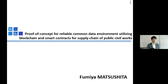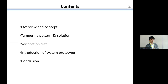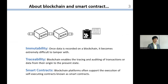So nice to meet you everyone. I'm Fumia Matsushita from the University of Tokyo, and it's very honored to have this opportunity to present. My research topic is about a pre-hub concept for a real common data environment to utilize blockchain and smart contracts for the supply chain of public works. This is my slide content, and before getting into the contents, I would like to give you a brief explanation about blockchain and smart contracts.